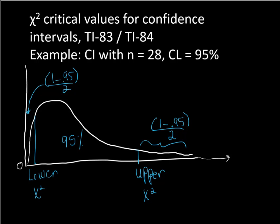And so that's what we need to find is what is the chi-square critical value that has two and a half percent of area to the right of it at degrees of freedom of N minus one, and what is the chi-square critical value that has two and a half percent of area to the left of it at degrees of freedom of 27.